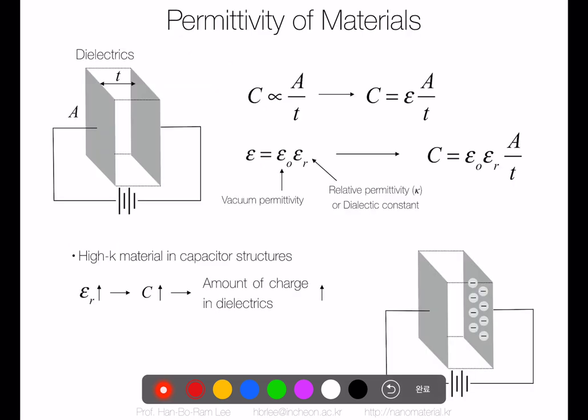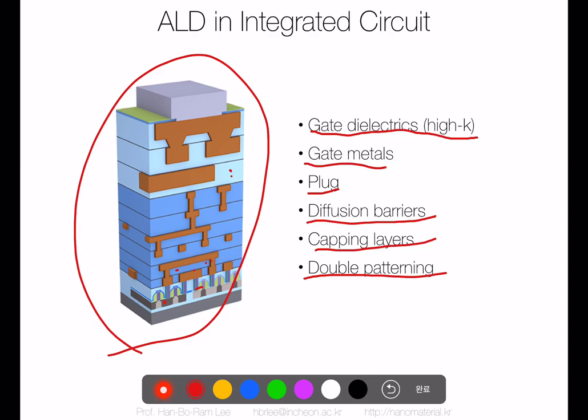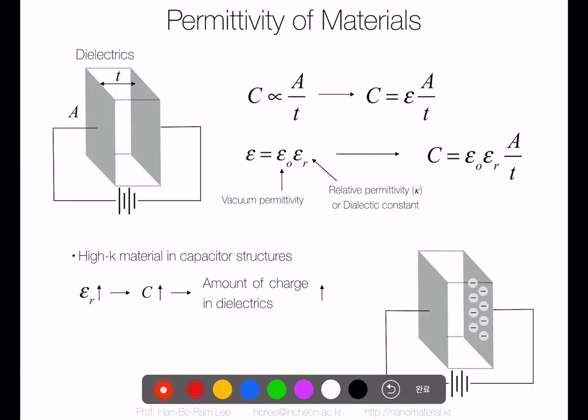We will take a look at the high-k material, typically for the gate dielectric. First, what is the high-k material? The transistor operates based on the MOS structure — metal, oxide, and semiconductor — the MOSFET structure. Charge is built up right below the metal gate, and to prevent direct conduction from electrons to the metal gate, we use a very thin insulator called the gate dielectric.